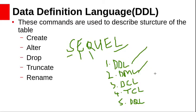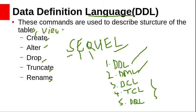Data Definition Language, DDL, commands are CREATE, ALTER, DROP, TRUNCATE, and RENAME. These commands are used to describe the structure of the database objects like tables and views. They are used to create, delete, and modify database objects.